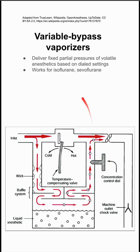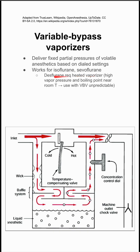These work for isoflurane and sevoflurane. On the other hand, desflurane requires a heated vaporizer. It has a high vapor pressure and a boiling point near room temperature, so its use with variable bypass vaporizers is unpredictable.